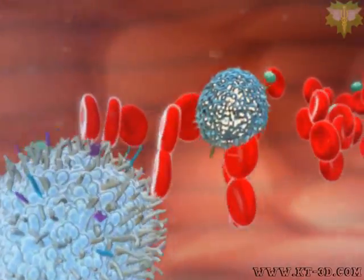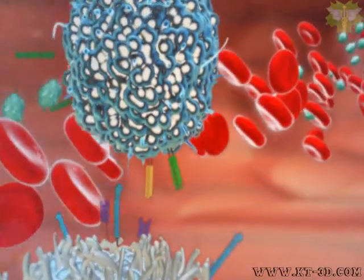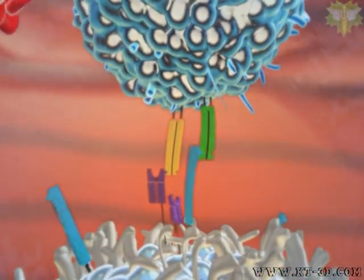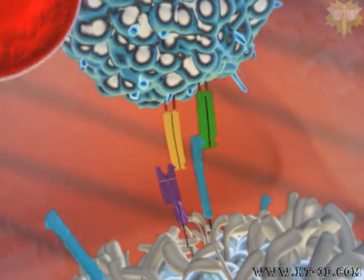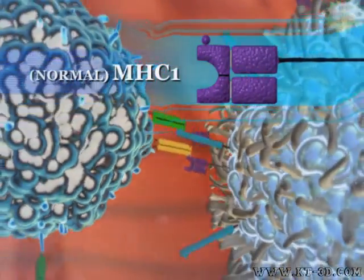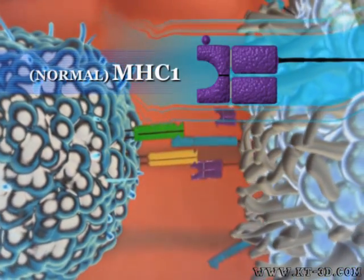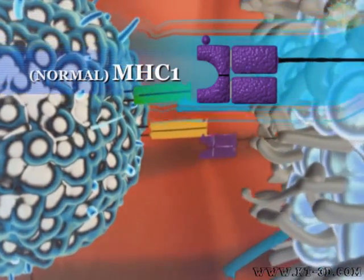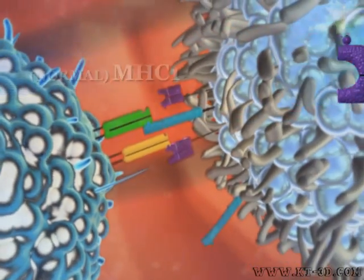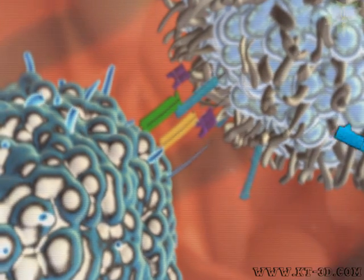Signaling by the inhibitory natural killer cell receptors suppresses the killing activity of the natural killer cells. The receptor for the target cell is the major histocompatibility complex 1, also known as MHC1. Natural killer cells will not kill healthy, genetically identical cells with normal expression of MHC1, as seen in other normal cells of the body.